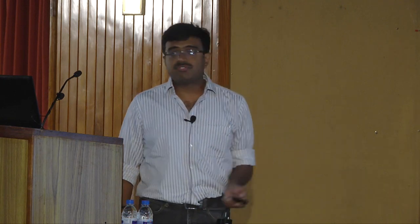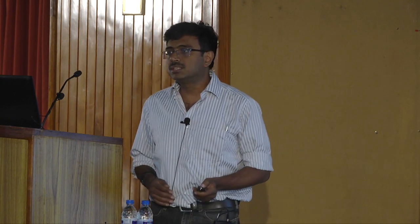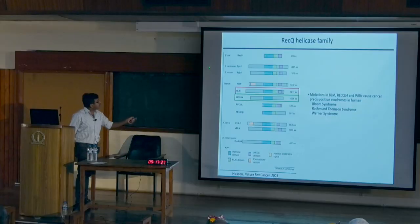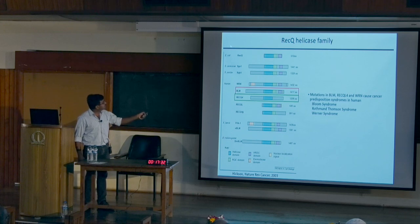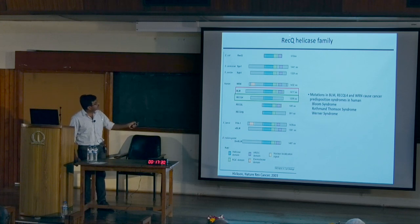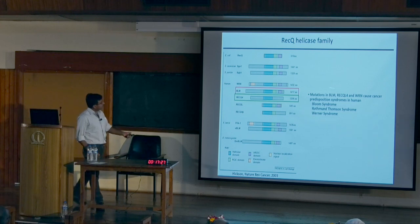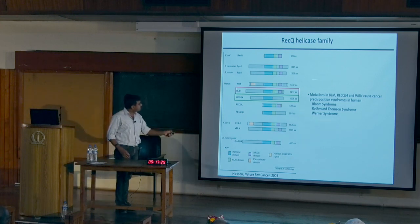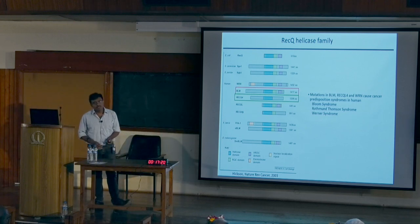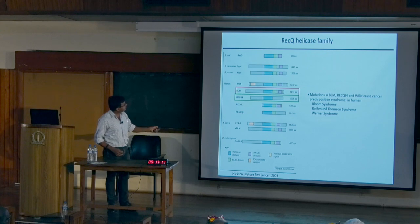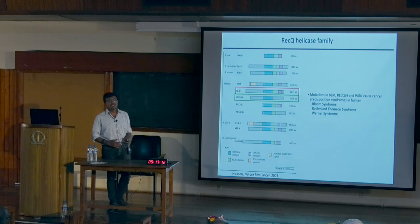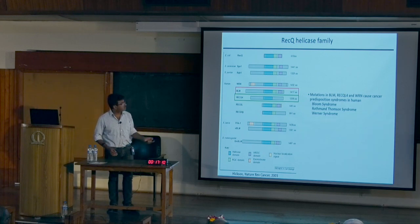Within this there is a family of proteins we are interested in. This is a family conserved across the entire evolution — from E. coli to the human — called the RecQ helicase family. Within humans there are five members, and three proteins — WRN, BLM, and RECQL4 — have special significance because mutations in each of them push people who carry the mutations into a cancer predisposition syndrome.